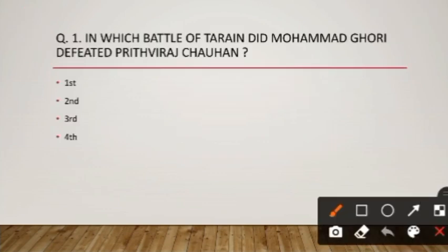In which battle of Tarain did Muhammad Gori defeat Prithviraj Chauhan? Muhammad Gori ne Prithviraj Chauhan ko Tarain ke doosre yudh mein parajit kiya — that is, Muhammad Gori defeated Prithviraj Chauhan in the Second Battle of Tarain.